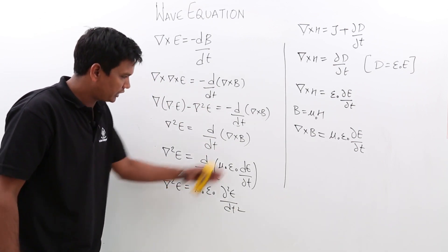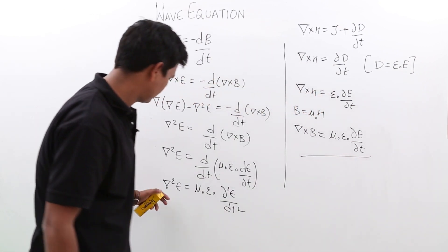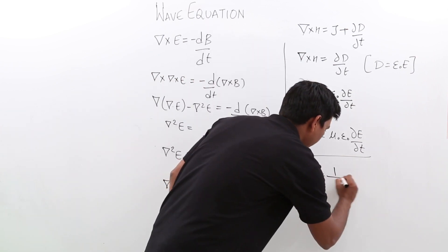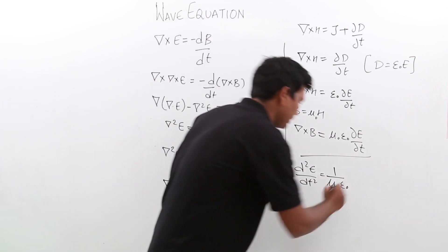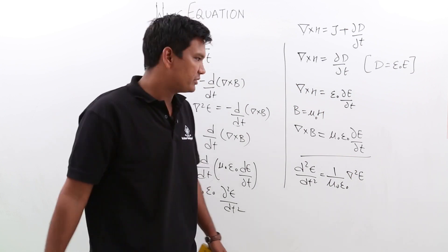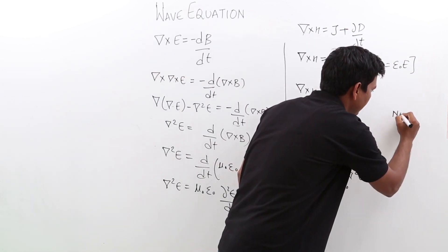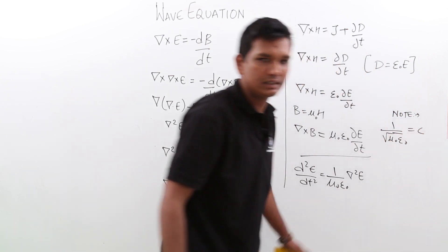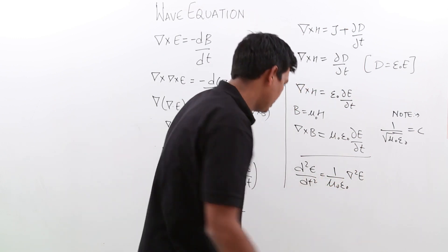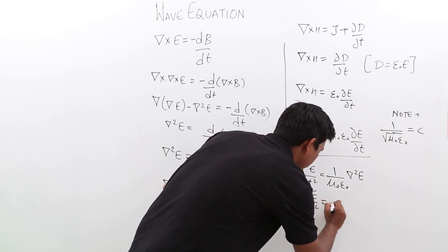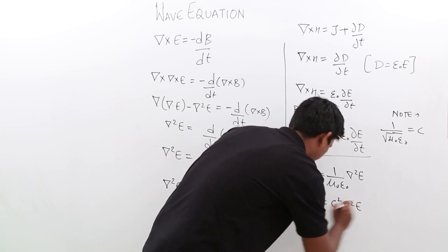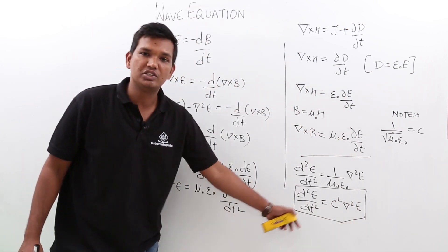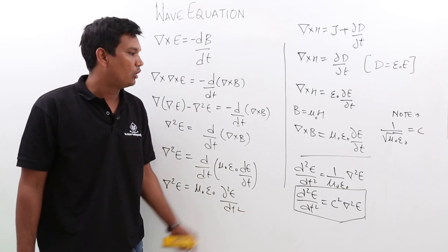Rearranging, d square E by dt square equals 1 over (mu naught epsilon naught) times del square E. Note that 1 over root of mu naught epsilon naught equals C, the speed of light, which we will see in future classes. So 1 over (mu naught epsilon naught) equals C square, giving us: d square E by dt square equals C square del square E. What we have proved is nothing but the general equation of a plane wave — derived from the Maxwell equations. We will see more in the upcoming videos. Thank you.